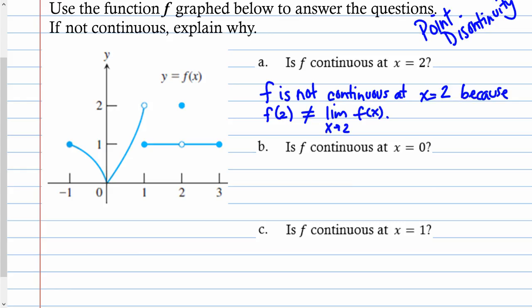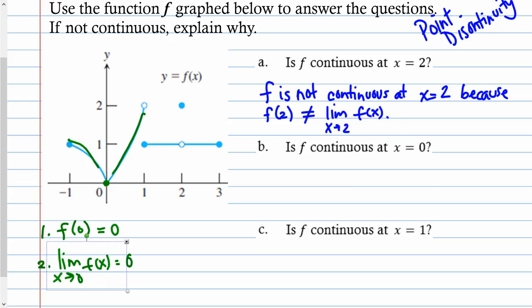Part B: Is f continuous at x = 0? At x = 0 there are no gaps, no holes, no breaks. The limit from the left is 0, the limit from the right reaches height 0, and f(0) = 0. So all three criteria are satisfied: f(0) equals the limit of f(x) as x approaches 0. Yes, f is continuous at x = 0.